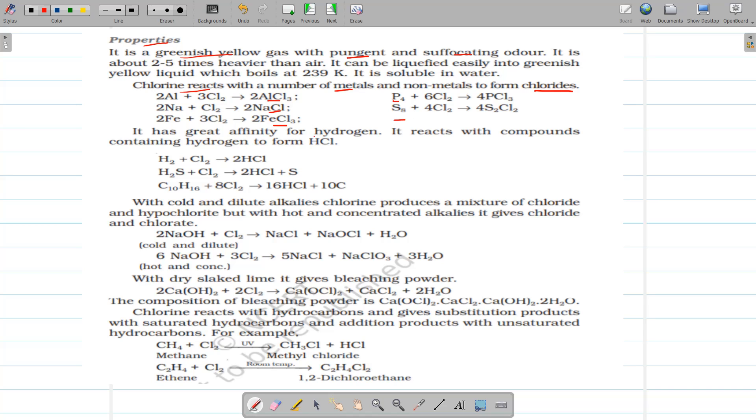It has great affinity for hydrogen. It reacts with hydrogen. For example, there is formation of hydrogen chloride. It also combines with the hydrogen sulfide to form HCl and sulfur. Then, with the hydrocarbon, it also reacts to form HCl and carbon.